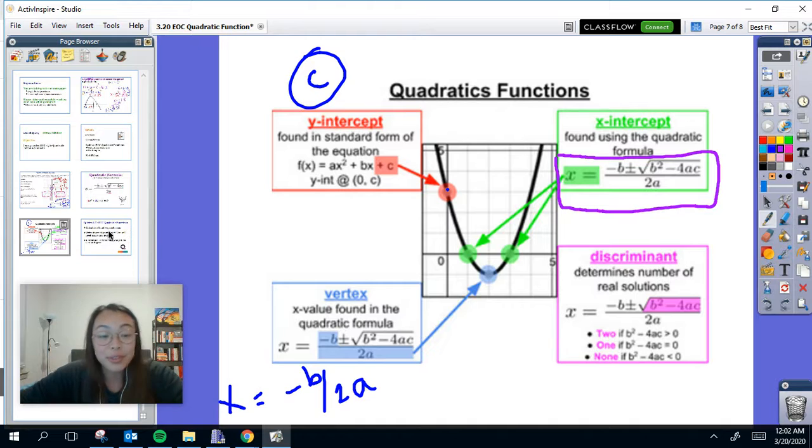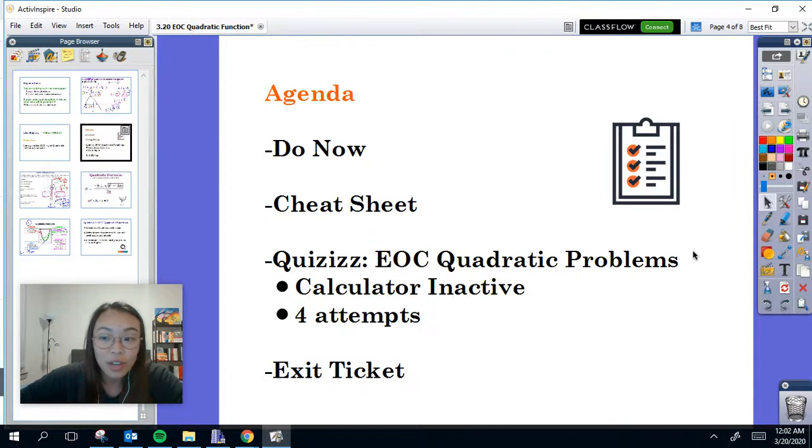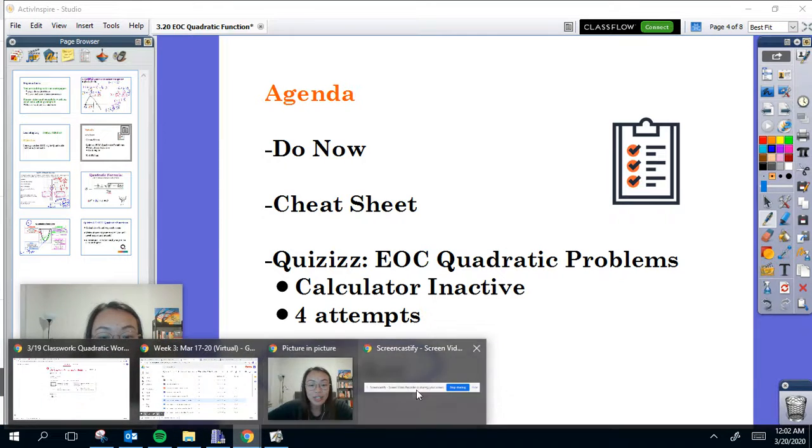That was really it for me today. Your activity is on quizizz because it's multiple choice. Please do not use Desmos, especially for your first and second round. There are EOC calculator inactive questions. You're going to need to write your stuff down. Make sure you have paper and pencil. You have four attempts. Keep taking it until you get at least 80% or higher. Do not forget to do your exit ticket. Have a good weekend.